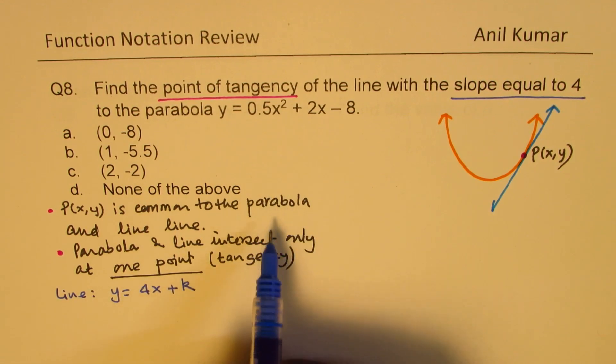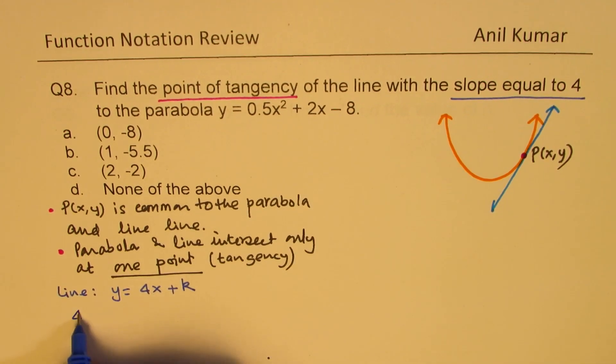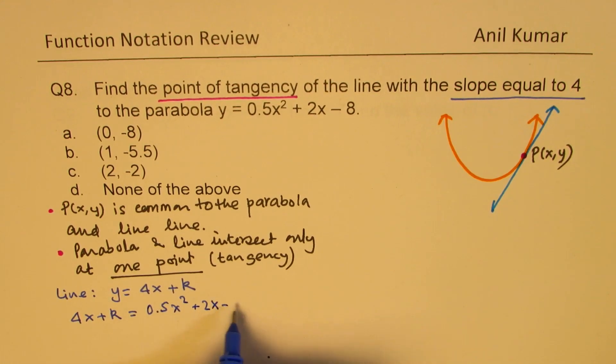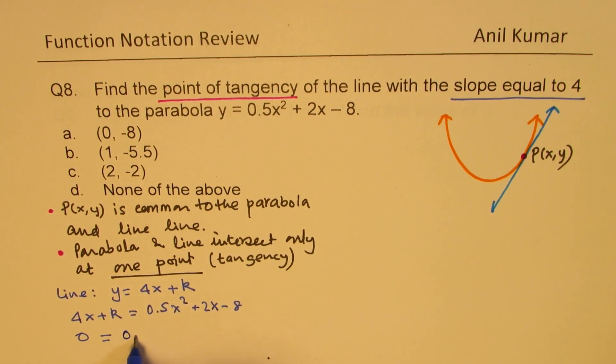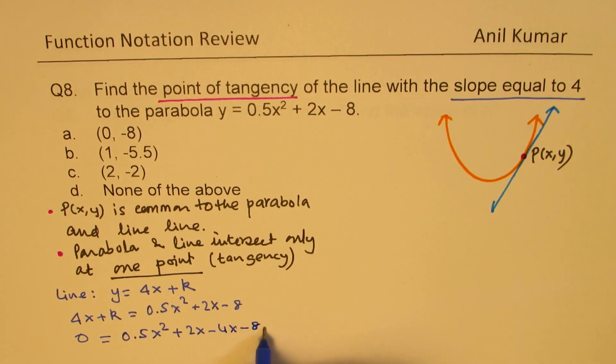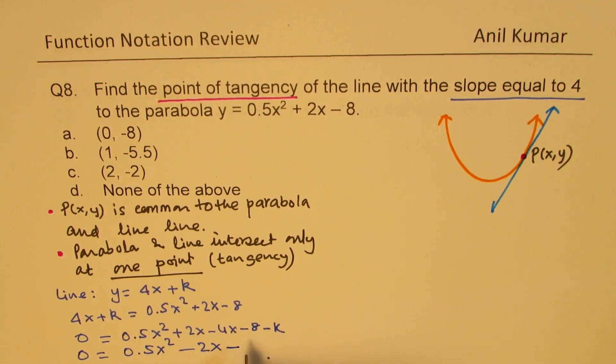Since it intersects at one point, at that point both y values will be the same. So we could say 4x + k = 0.5x² + 2x - 8. Now we can solve this quadratic equation. Taking this to the right side, we get 0 = 0.5x² + 2x - 4x - 8 - k. So we could write this as 0 = 0.5x² - 2x - 8 - k.